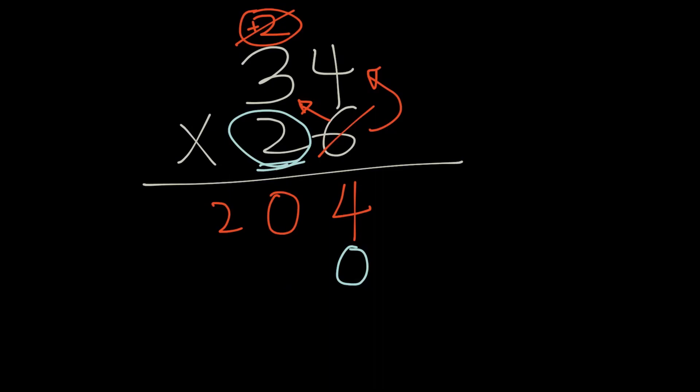So, now we're going to go ahead and take 2 times 4, and that becomes 8. And 2 times 3 equals 6.